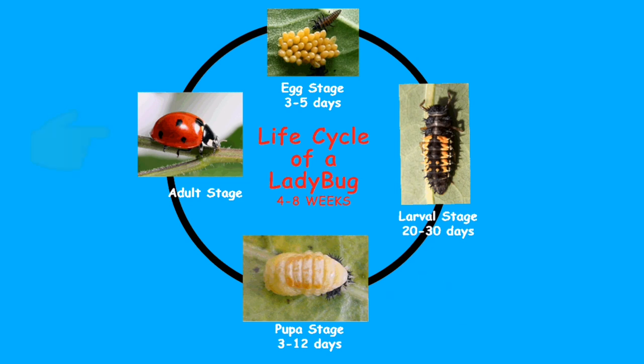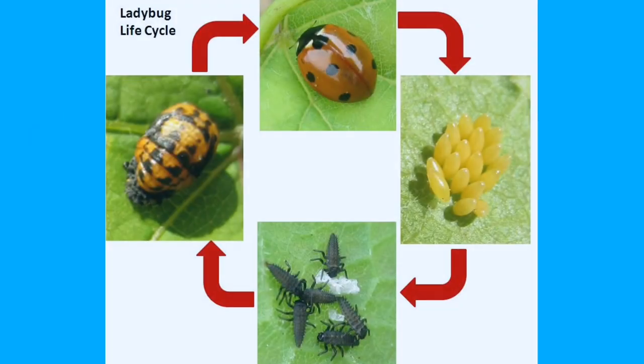Finally, the adult ladybug emerges from the pupa. The adult can fly and reproduce, and that completes the life cycle of a ladybug. To recapitulate, the four stages you have to remember are: egg, larva, pupa, and adult.